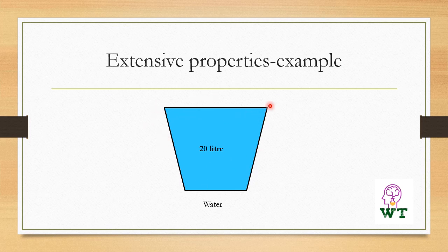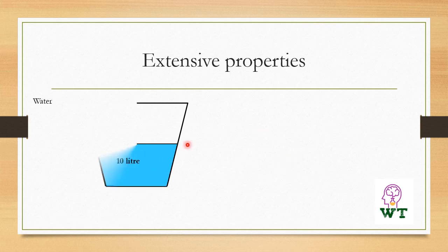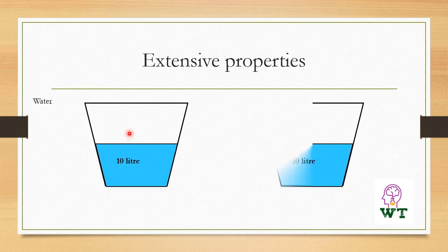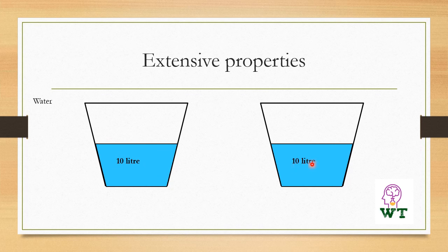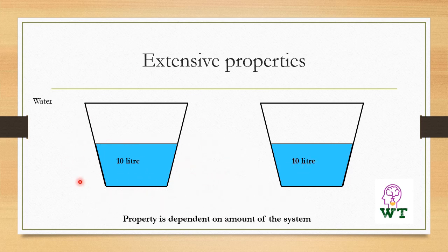Here, I have given a beaker with 20 litres of water. If we transfer the 20 litres of water into two beakers of 10 litres each, then the volume gets reduced. Therefore, volume is a property which depends upon the amount of the substance.